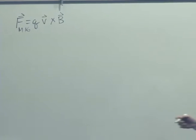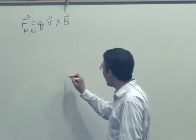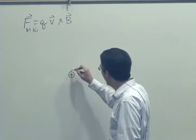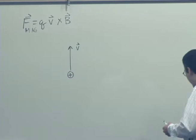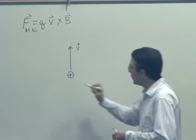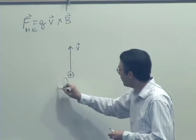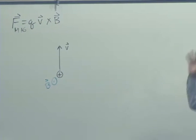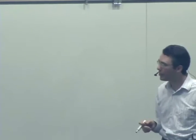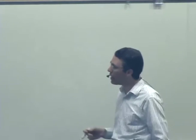We're looking at the special situation of a charge moving where the magnetic field was perpendicular to the velocity. So we had B pointing out of the page like this. Remember, this is a magnetic field due to other moving charges, not to this particular charge, due to a bar magnet or something like that.